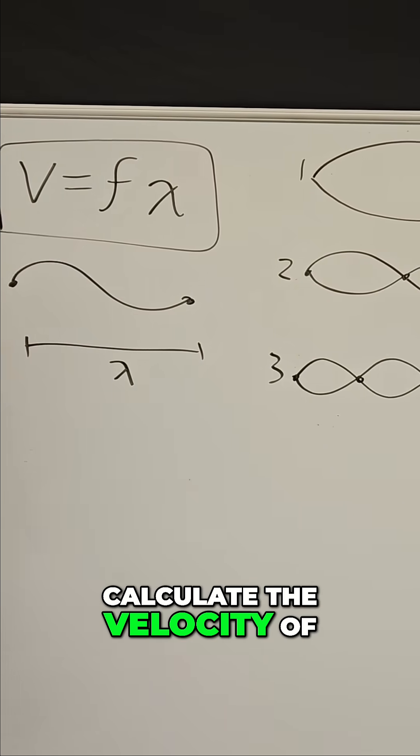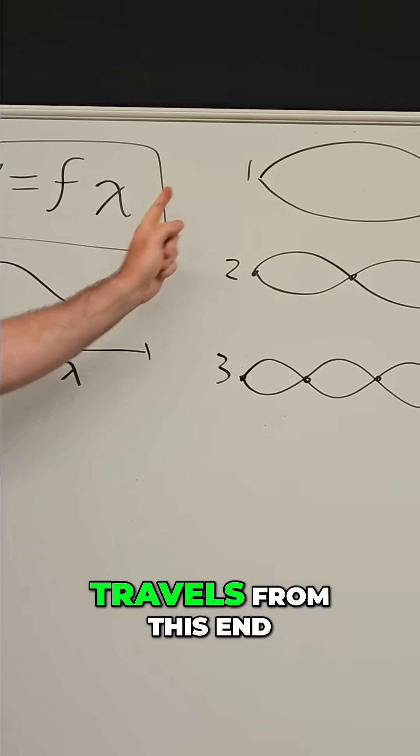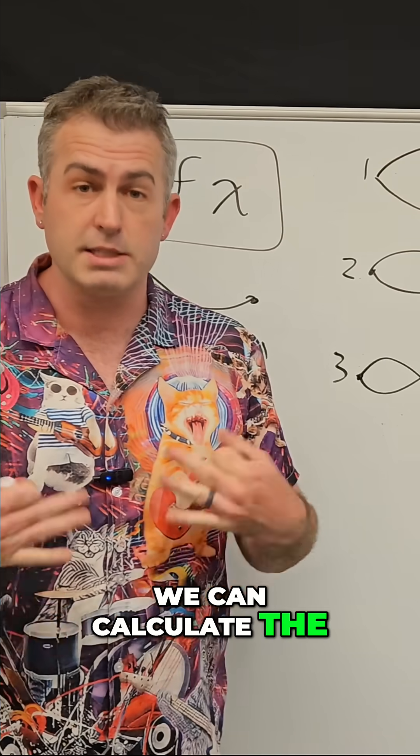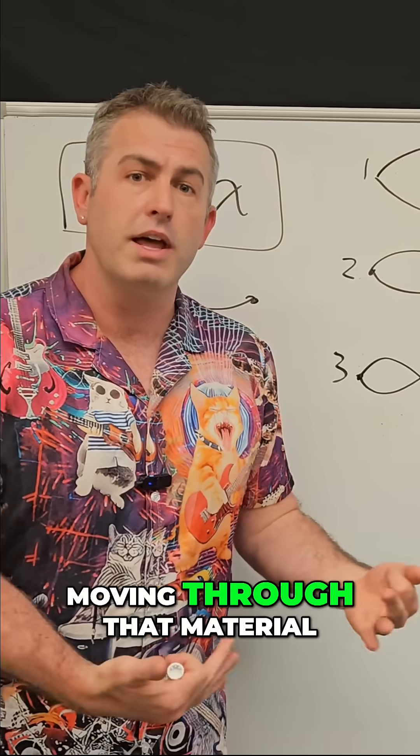You can actually calculate the velocity of the wave as it travels from this end of the slinky to that side and bounces back. In other words, we can calculate the speed of a wave moving through that material.